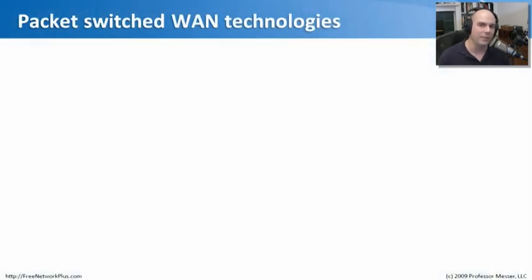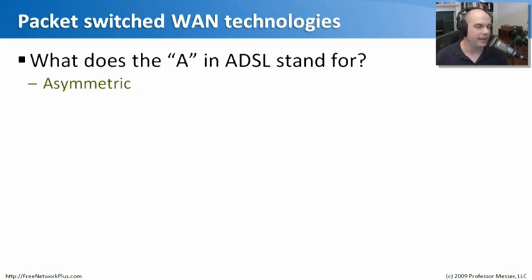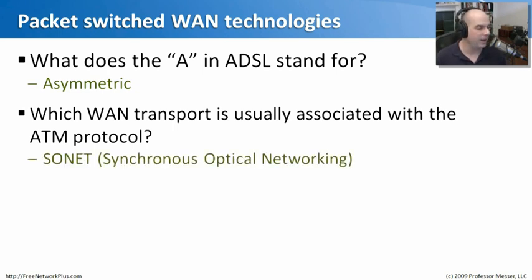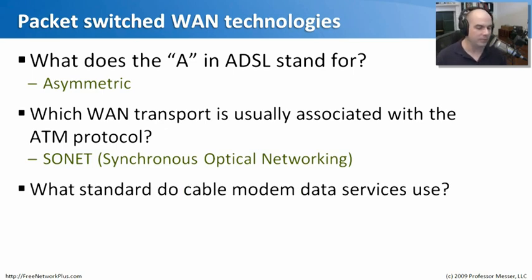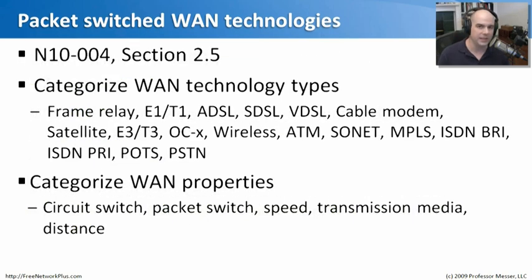Let's review some of what we've learned about packet-switched networks. First: what does the 'A' in ADSL stand for? Our DSL technologies can send traffic in one speed and receive in another with ADSL, and that's where it gets the term 'asymmetric.' Next: what WAN transport is usually associated with the ATM protocol? It's SONET — Synchronous Optical Networking. Finally: what standard do cable modem data services use? It's DOCSIS — Data Over Cable Service Interface Specification.